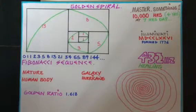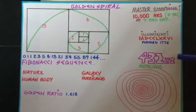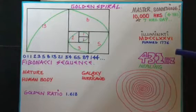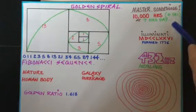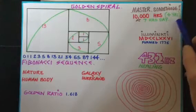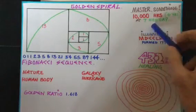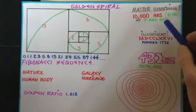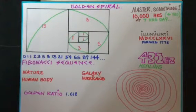As we know, 432 is the healing hertz, adds up to 9, part of the 369 codes. I want to master something—that's what a Buddha once said. He said it would take 10,000 hours. So if we did that seven hours a day, every day of the week, it would take four years to master something.